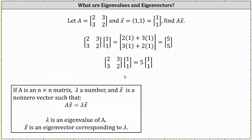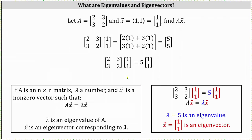So again, going back to our example, since matrix A times vector X is equal to five times vector X, lambda equals five is an eigenvalue of matrix A, and vector X, the vector [1, 1], is an eigenvector corresponding to lambda equals five.